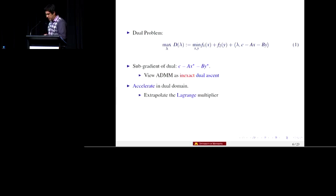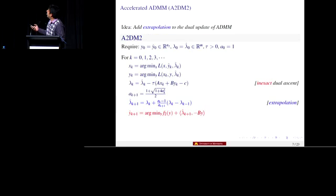So how can we accelerate it? We can do the extrapolation in the dual update. The way we do it is that we have the usual ADMM updates. We extrapolate the original update that we had for the dual variable. And because of the inexactness that we had, we have to do another update on the y here to make the algorithm converge. This is the only hiccup from the original implementation or original idea of Nesterov.